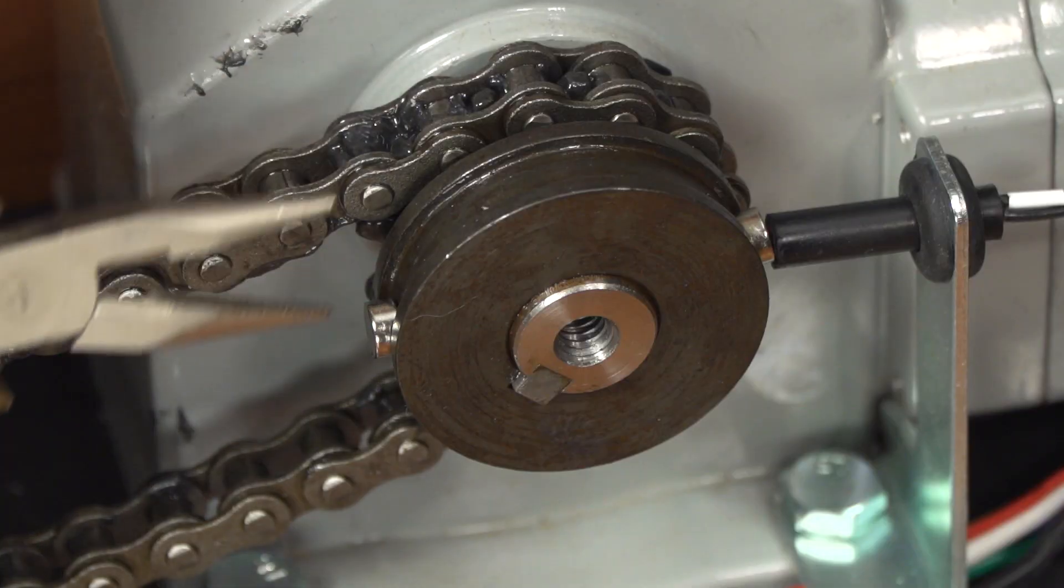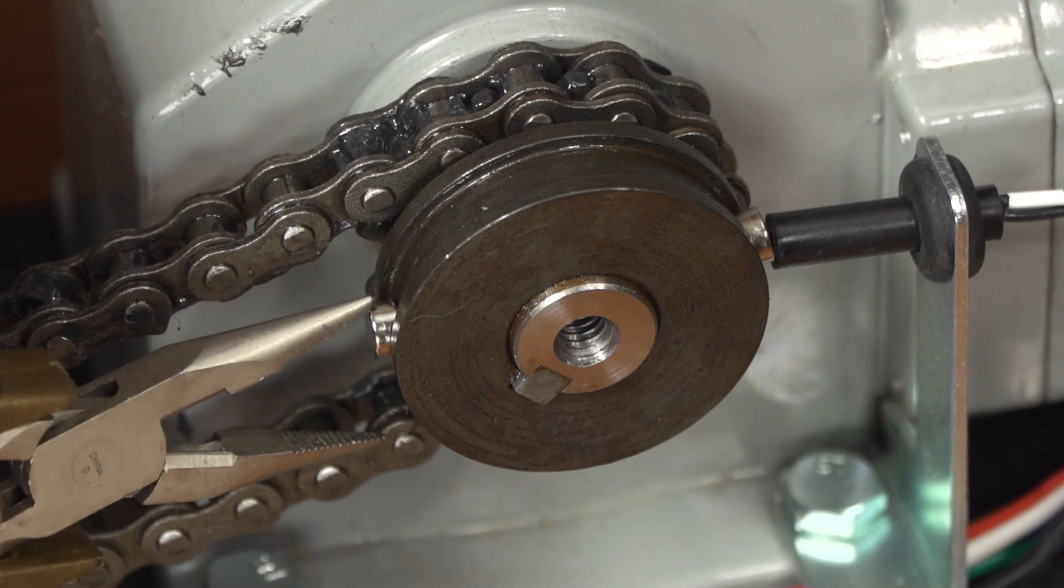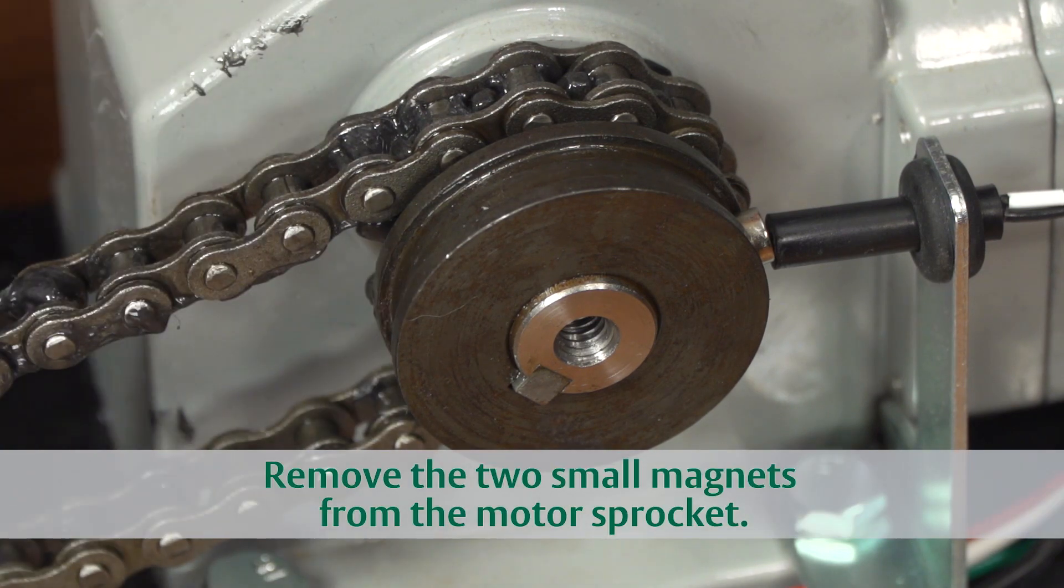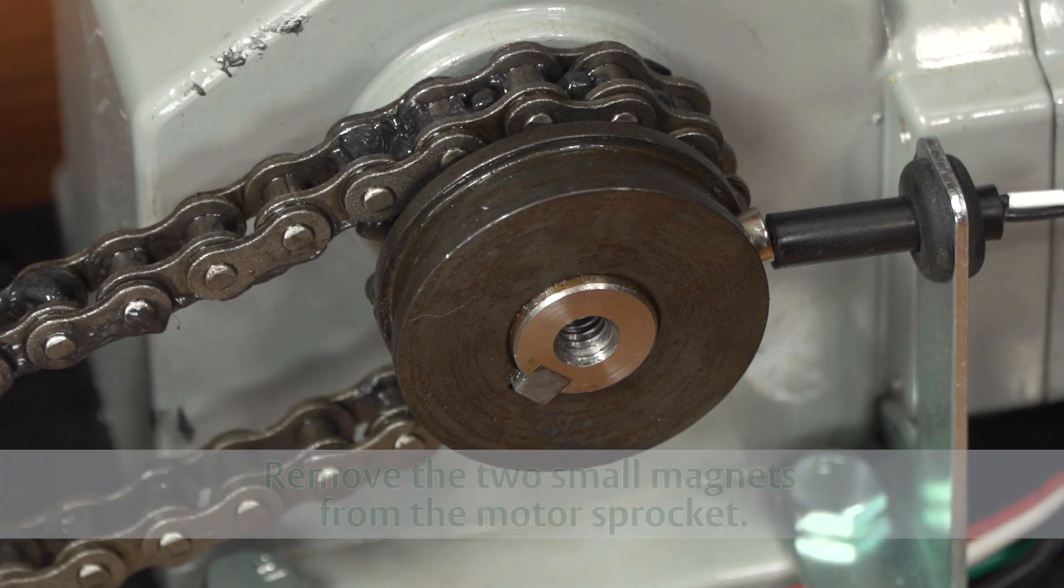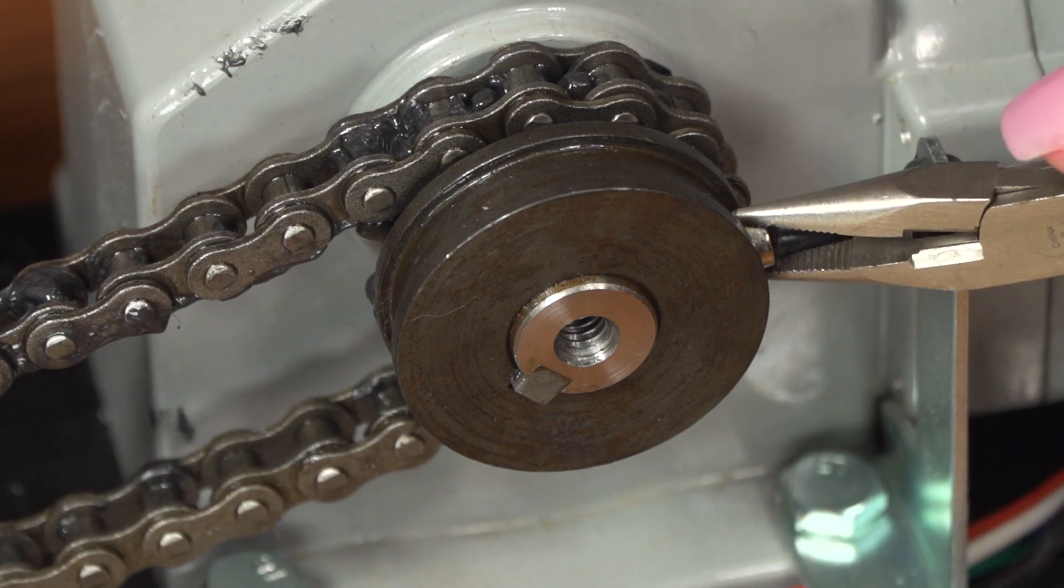The next step is to remove the two small magnets from the motor sprocket. A pair of needle nose pliers works well. Just find and remove the magnet from each side of the sprocket.